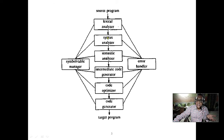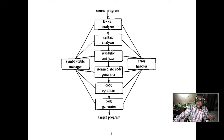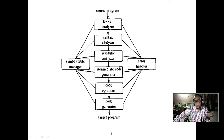The syntax analyzer, or parsing, is one of the toughest phases. Your programming language should be a deterministic context-free grammar — 99% of programming languages are deterministic context-free grammar. Otherwise it will be ambiguous. Only deterministic context-free grammar can give an unambiguous grammar.